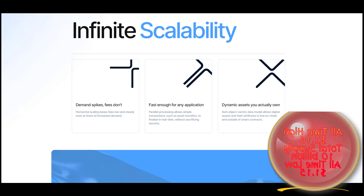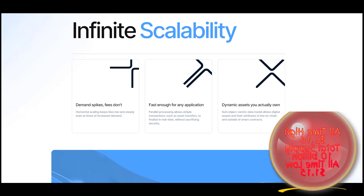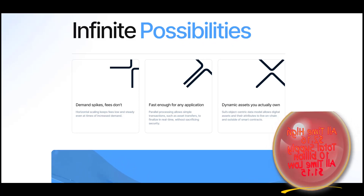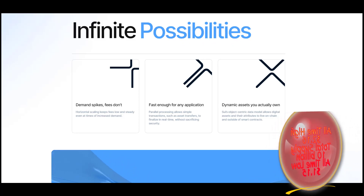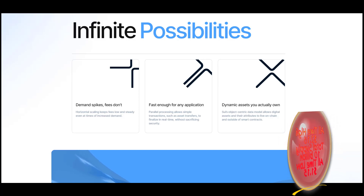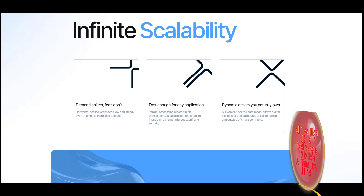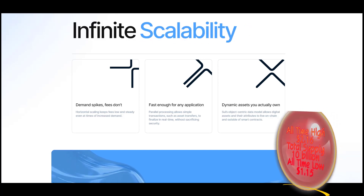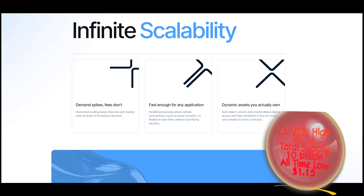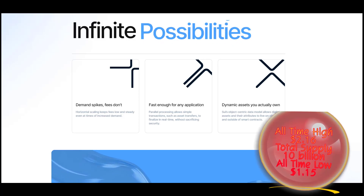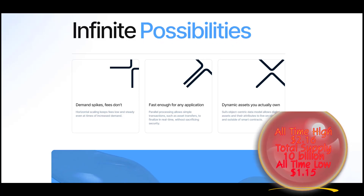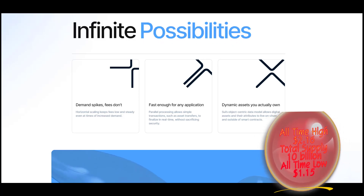What makes Sui unique? Through features such as horizontal scaling, composability, sparse replay, and on-chain storage, Sui's architecture solves pain points common to first-generation blockchains.